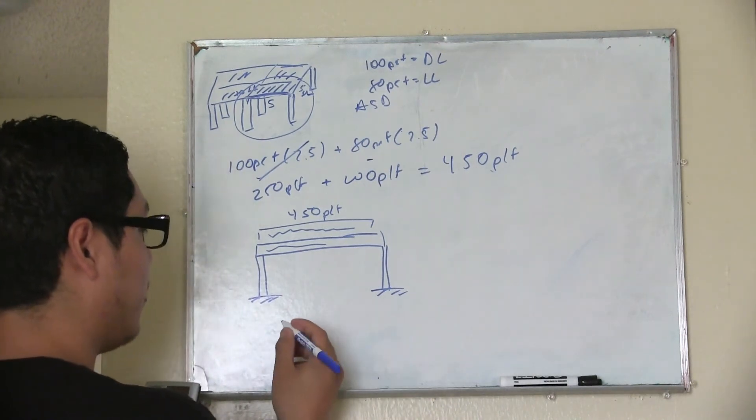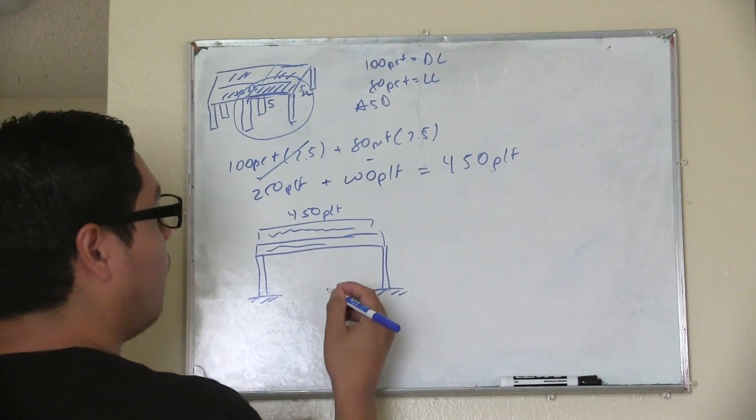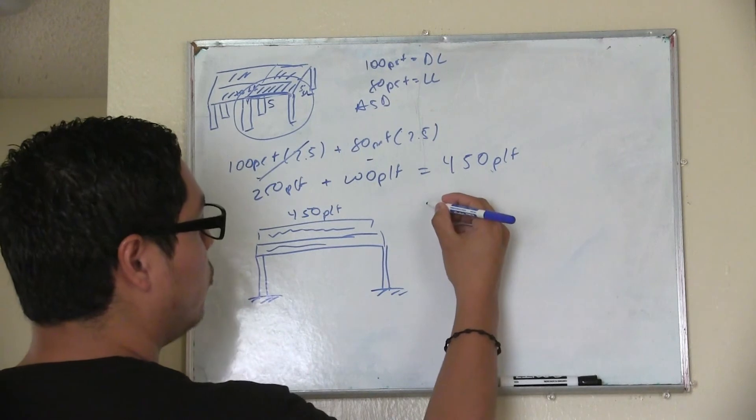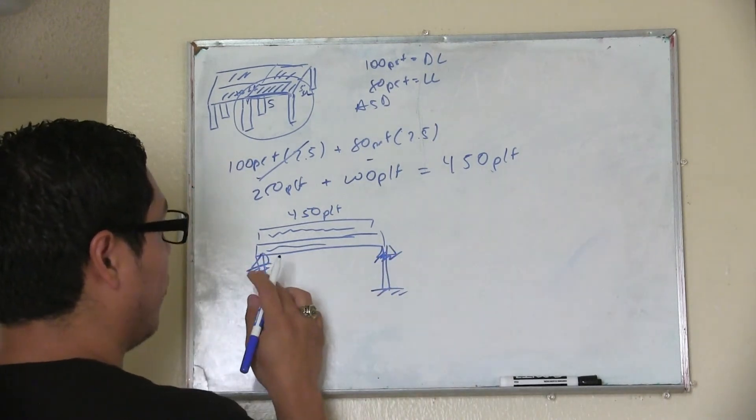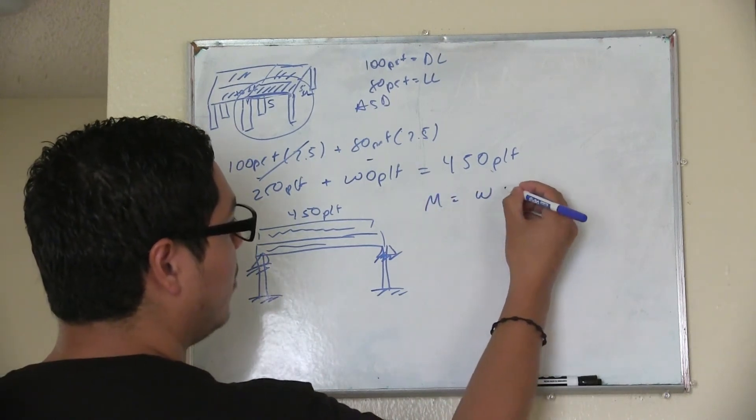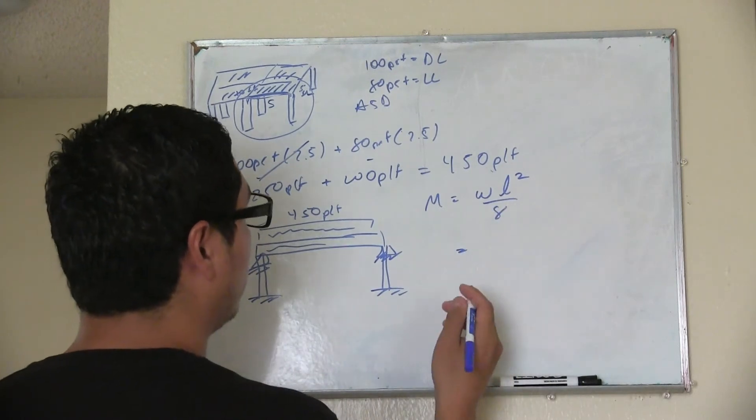So let's calculate the reactions and the maximum moment. So to get the maximum moment in a simple span beam like this, what you're going to do is you're going to say this like this instead. Because you're going to convert this into columns. Your maximum moment at this section is going to be W times your length squared over 8.